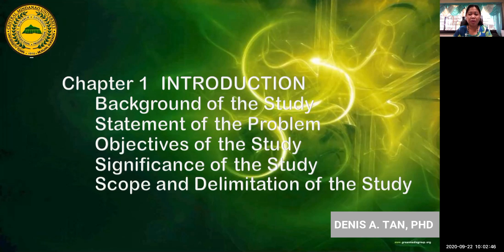You need to identify who the beneficiaries are, and then write a significant contribution per paragraph per stakeholder. For example, about performance in mathematics — the first to be benefited will be, say, the administrator. In a paragraph, you will write down how your study would actually give significance to the work of an administrator.